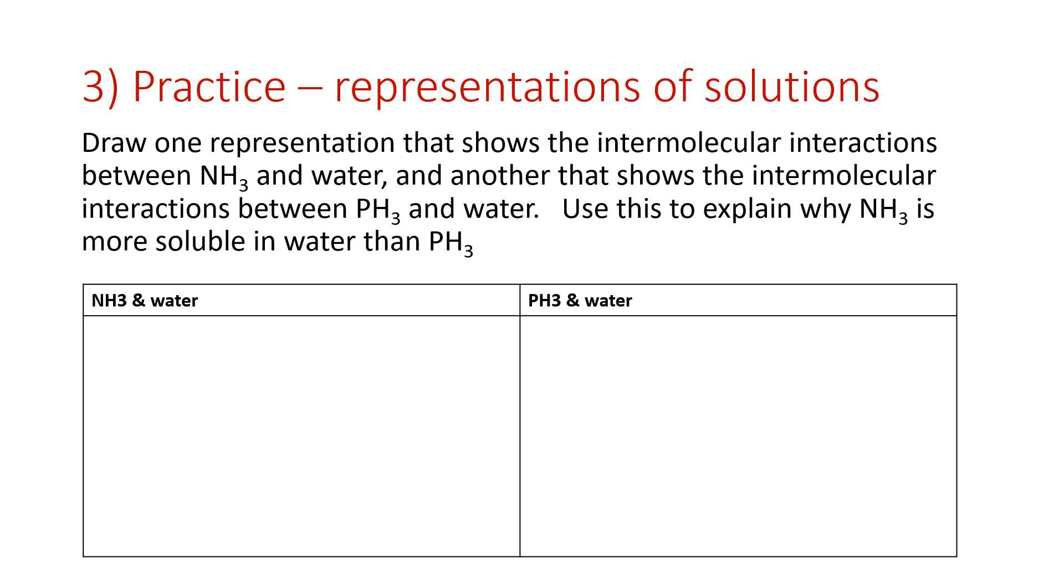We are told that NH3 is more soluble in water than PH3, and we want to explain why. And this question asks us to also draw a particle representation. So we're kind of doing a two-for-one here. We're thinking about the IMFs, and we're thinking about what this particle representation would look like. So let me draw them both out. PH3 and NH3 have very similar structures. They're both trigonal pyramidal in shape. So they're both polar.